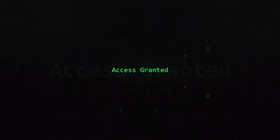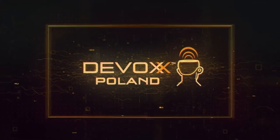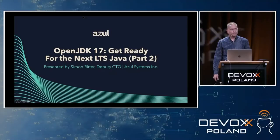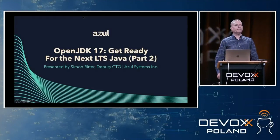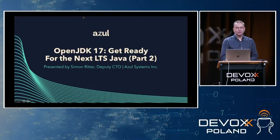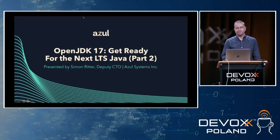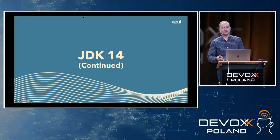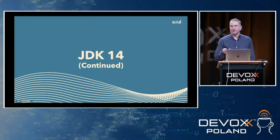We are back. I've got 50 minutes to talk about the rest of the changes in Java since JDK 12. This is part two of the presentation that started before the break. As you'll remember, we were talking about JDK 14, and we talked about records and pattern matching for instanceof. Now we'll start by talking about some of the things that have changed in terms of some of the APIs.